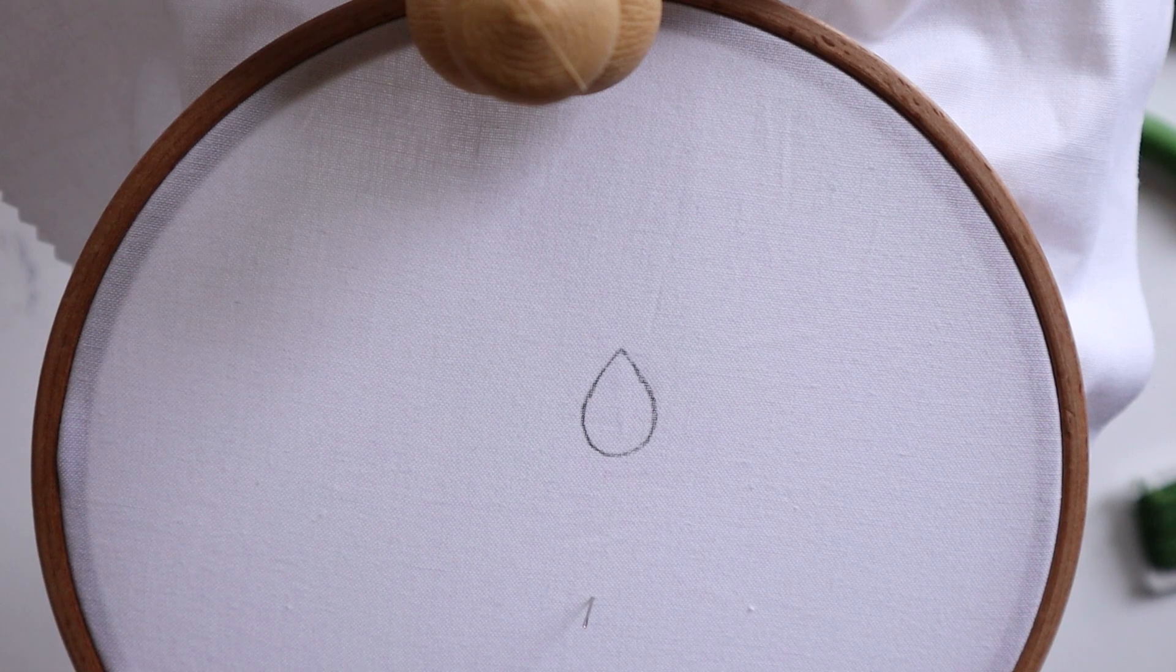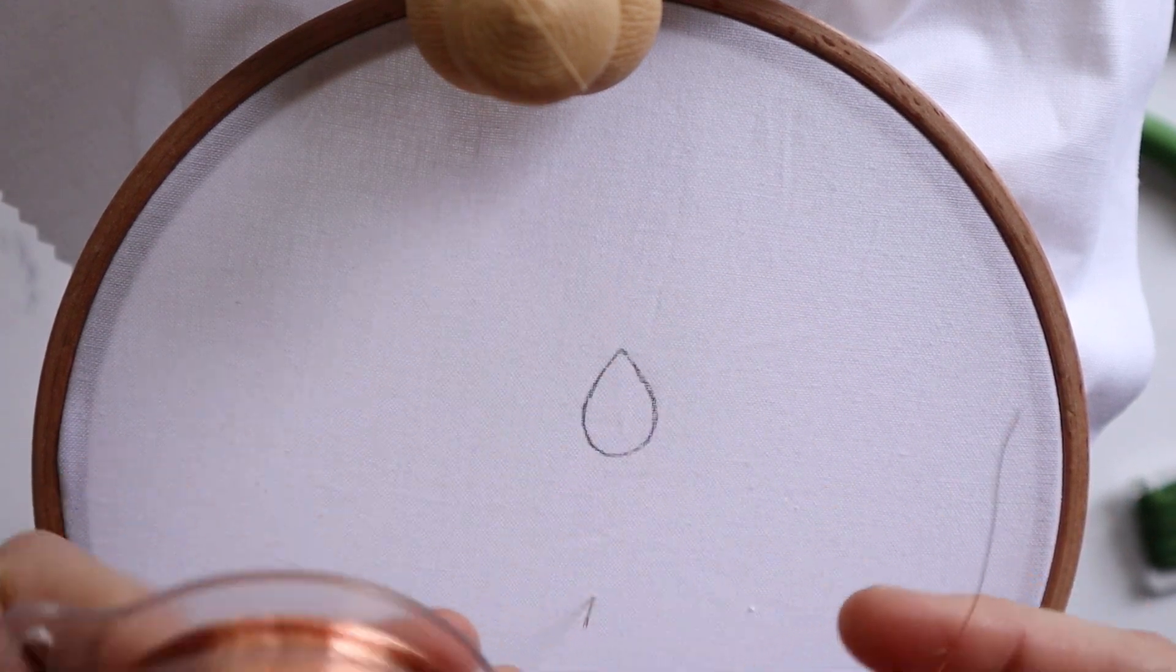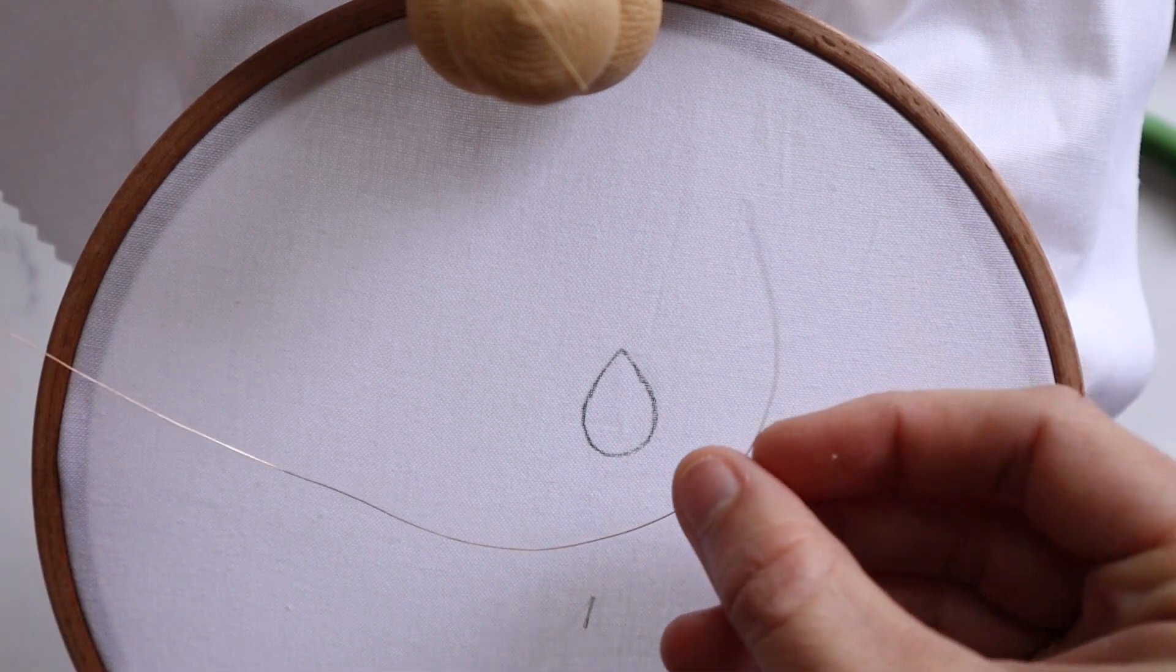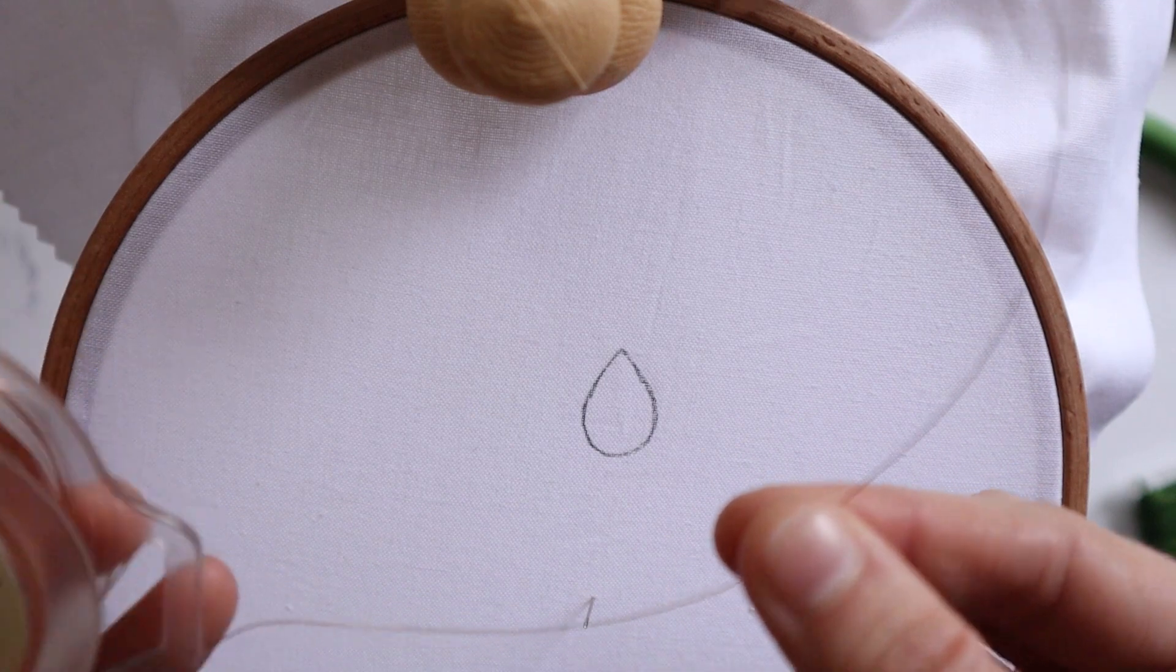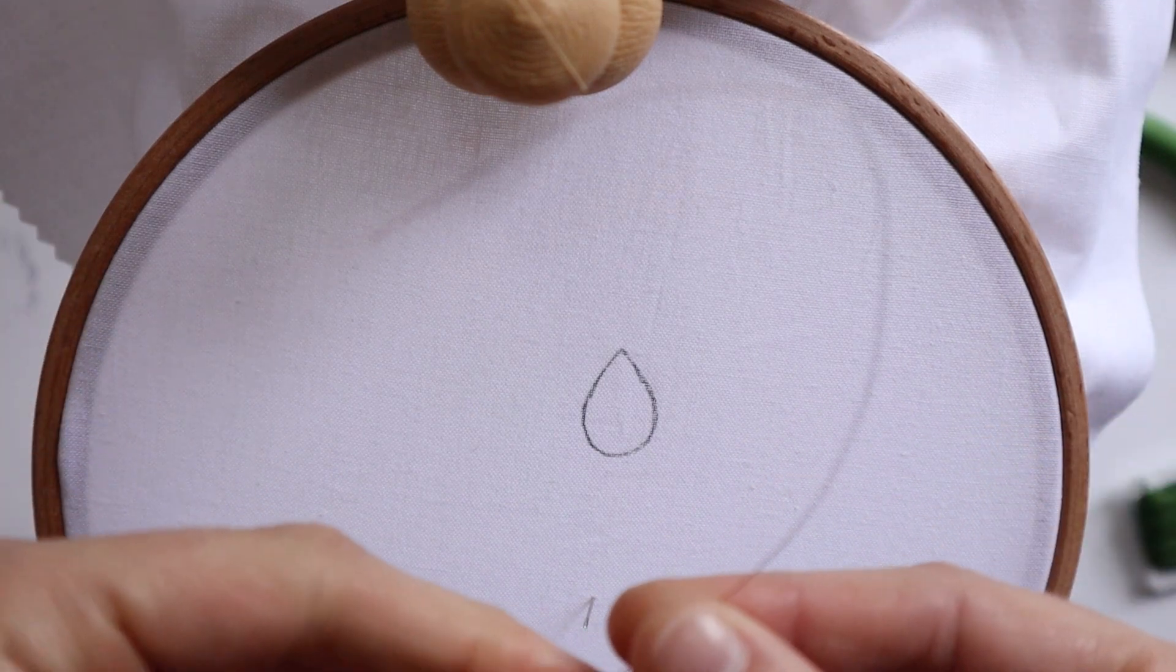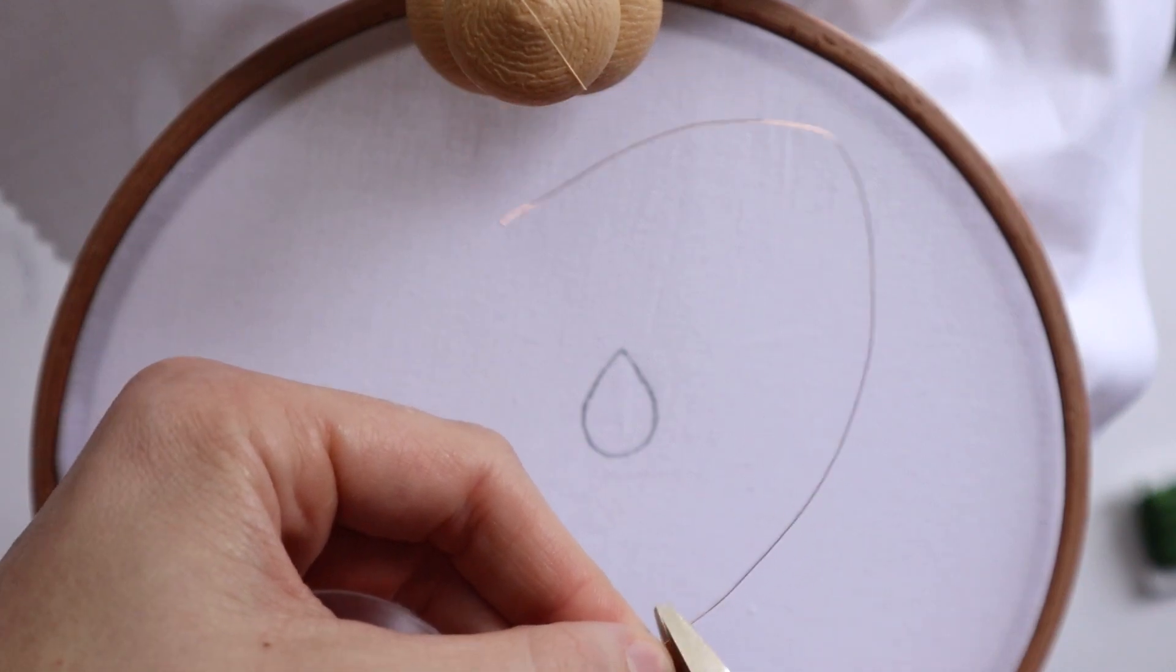The very first thing you're gonna want to do is take your wire and cut out a piece. I like to kind of estimate and leave a little bit of room, so I'm gonna cut something that's definitely longer than needed, but it's easier to start with that and then trim it.